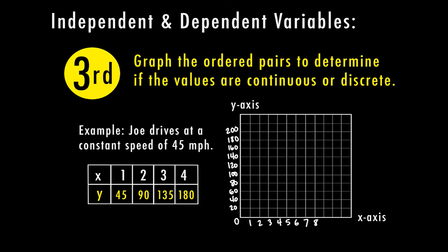If we labeled the y axis by 1s we wouldn't have enough room to get all the way to 180, so we label it according to the numbers we have. At the first hour Joe drives 45 miles, the second hour 90 miles, the third hour 135 miles, and the fourth hour 180 miles. If he continues at this speed he's going to keep driving until he stops, so let's talk about the continuous or discrete part.